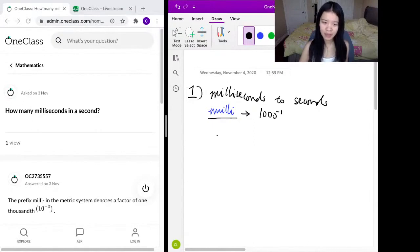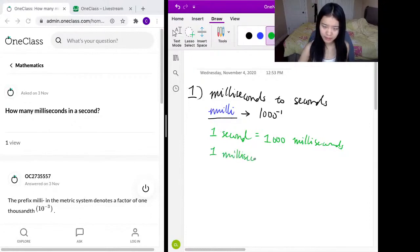So you would know that there is a thousand milliseconds in a second. So one second equals a thousand milliseconds. And one millisecond would equal one over a thousand, or one over a thousand seconds. So in order to convert from milliseconds to seconds, the short answer is to divide by a thousand.